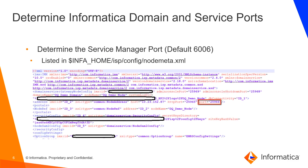We next want to find the service manager port. To find it, we must open the node.meta.xml file at the location shown here. The default service manager port is 6006. In this example, the service manager port is 25966 — you will see it is listed right after the main node port.